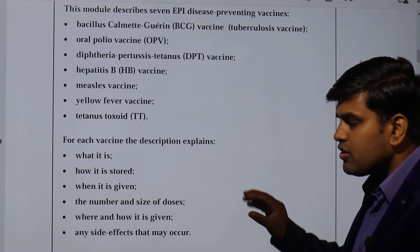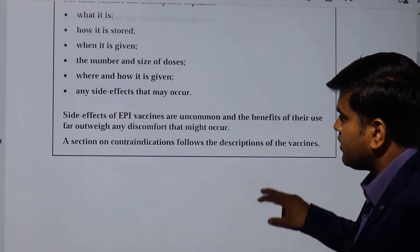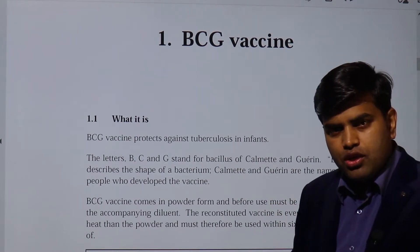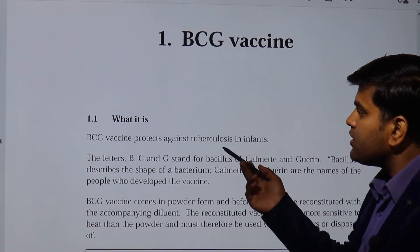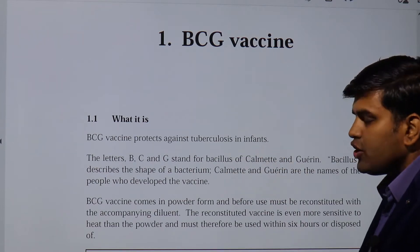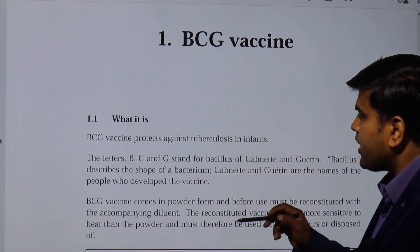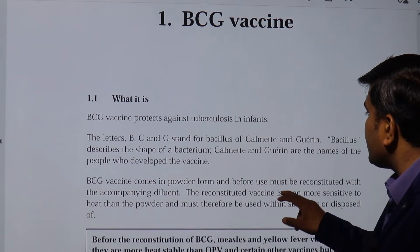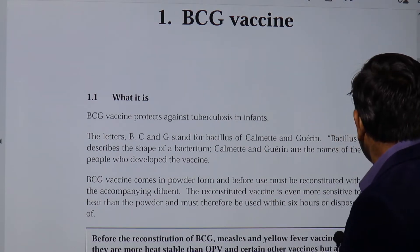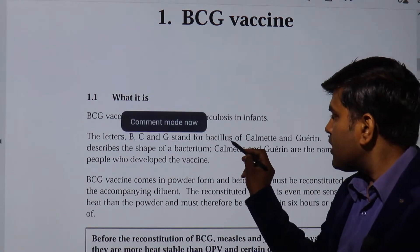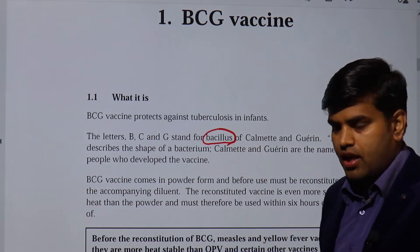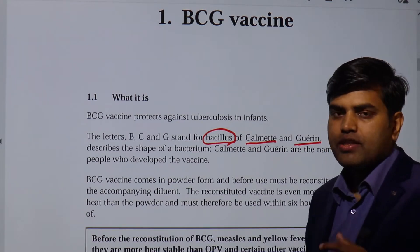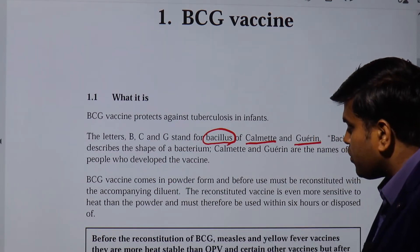Let's talk about the BCG vaccine. BCG is a vaccine that protects against tuberculosis in infants. The letters stand for Bacillus of Calmette and Guérin. 'Bacillus' refers to the rod-shaped bacterial form of tuberculosis, and 'Calmette and Guérin' are the names of the scientists who developed it.